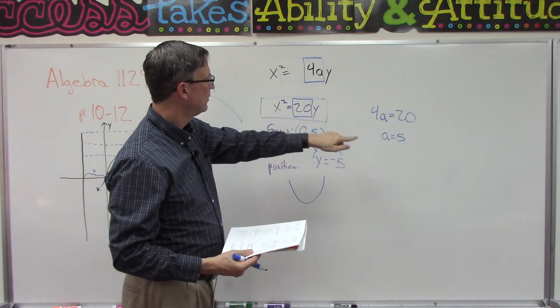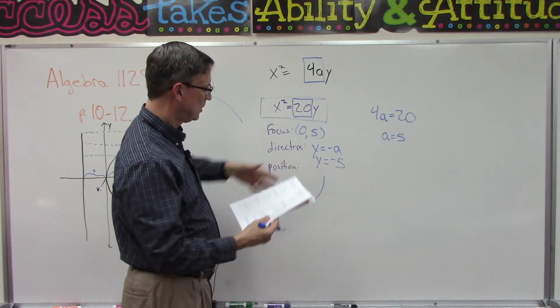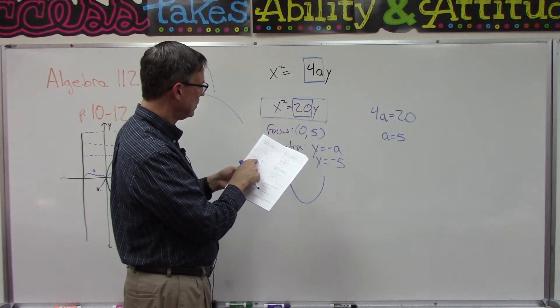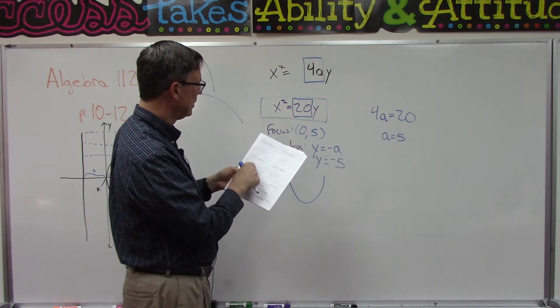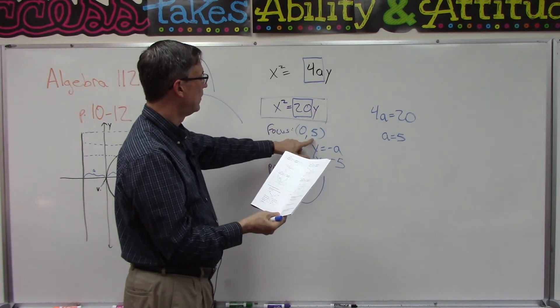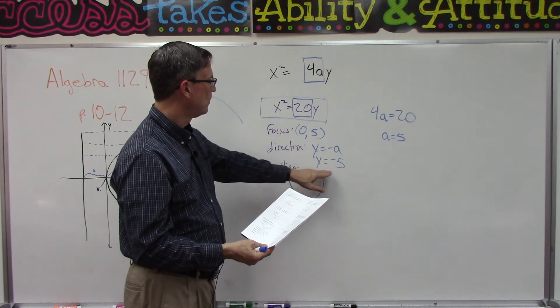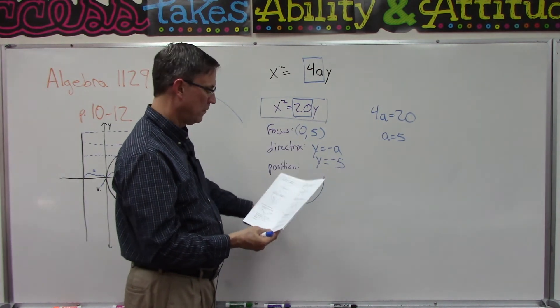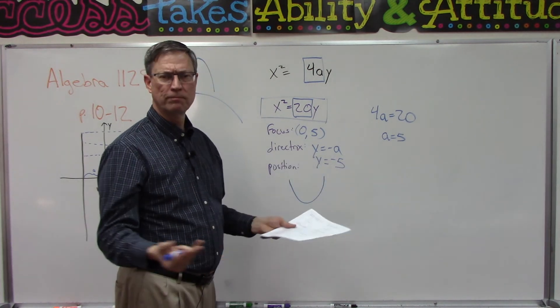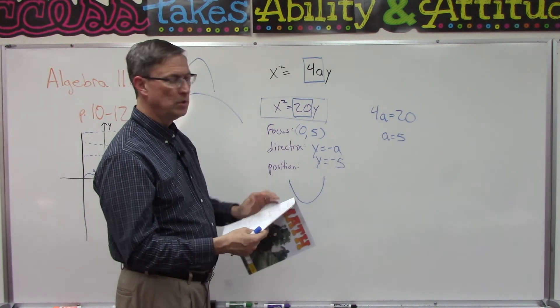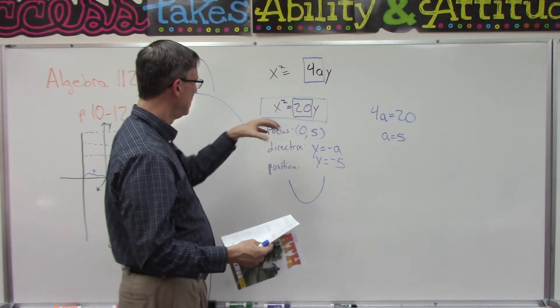And that's all there is to it. We're identifying which of these four patterns your homework problem looks like. First step is solve to find a, and then we just follow the example to plug in. So the vertex will be zero zero, the focus in this case is zero five, the directrix is the opposite of a so it's going to be y equals negative five, and then we can see that it opens up.